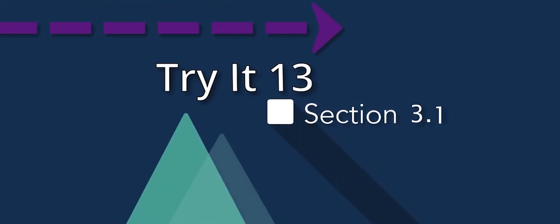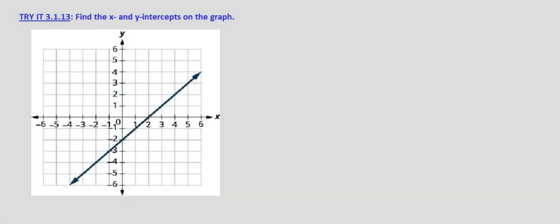So with this try it exercise, we're given the graph of a line and we're asked to find the x and y intercepts. So as far as the x-intercept is concerned, that's simply where the line crosses the x-axis.